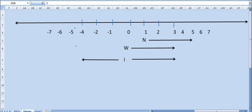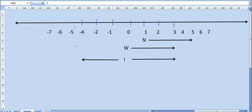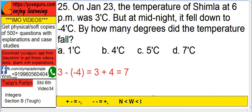It's very simple. See the number line — this is 3 and this is minus 4. The difference between these two is 3 minus minus 4. Minus minus becomes plus, so 3 plus 4 is 7.